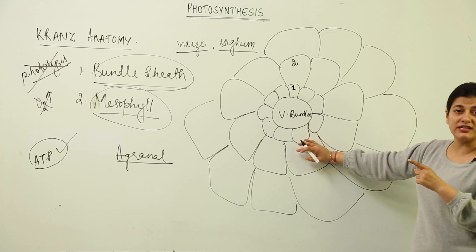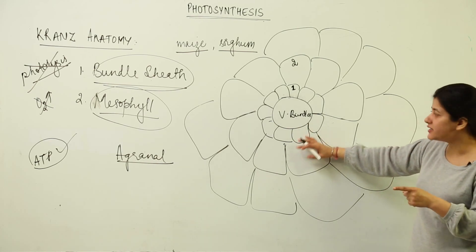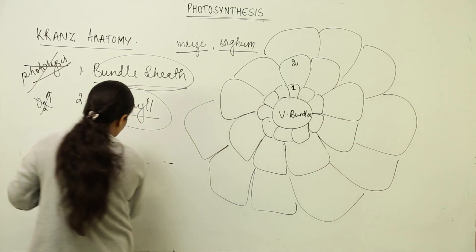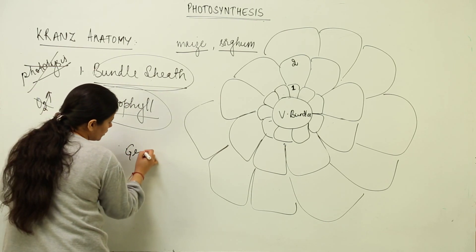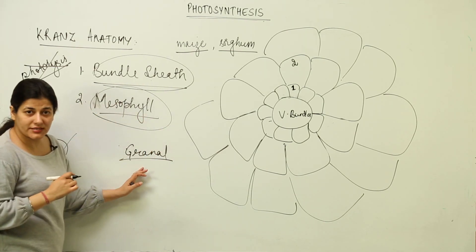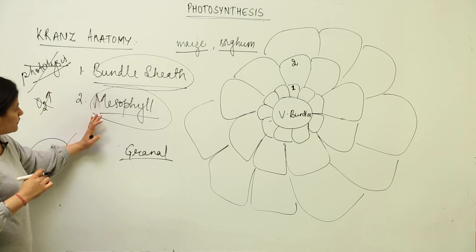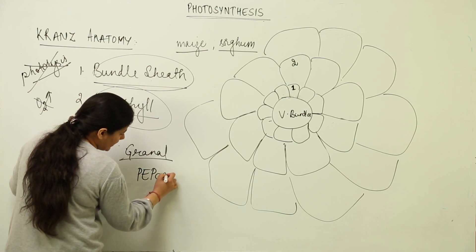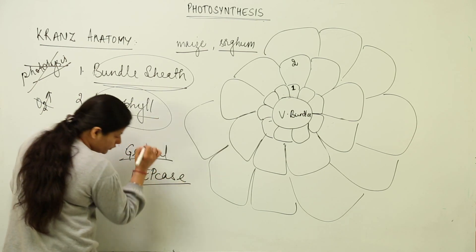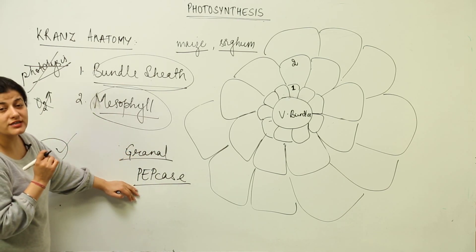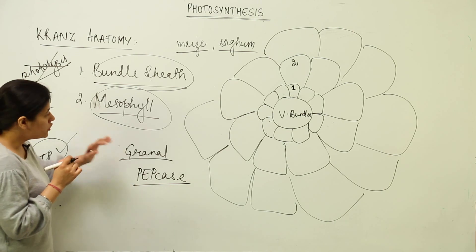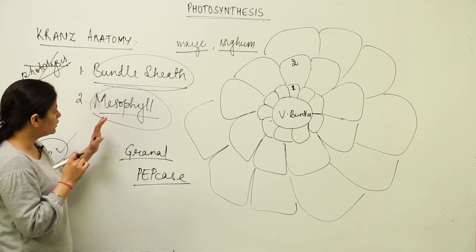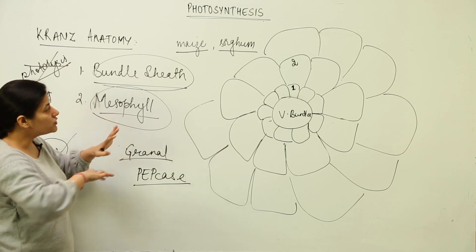The bundle sheath cells, which surround the vascular bundles, have Rubisco in their chloroplasts. The mesophyll cells, on the other hand, have chloroplasts with grana — lots of grana with a granal arrangement. Importantly, the mesophyll cell chloroplasts have an additional enzyme: PEP carboxylase (phosphoenolpyruvate carboxylase). This enzyme is responsible for fixation of carbon dioxide. So Rubisco is present inside the bundle sheath cells, and PEP carboxylase is present inside the mesophyll cell chloroplasts.